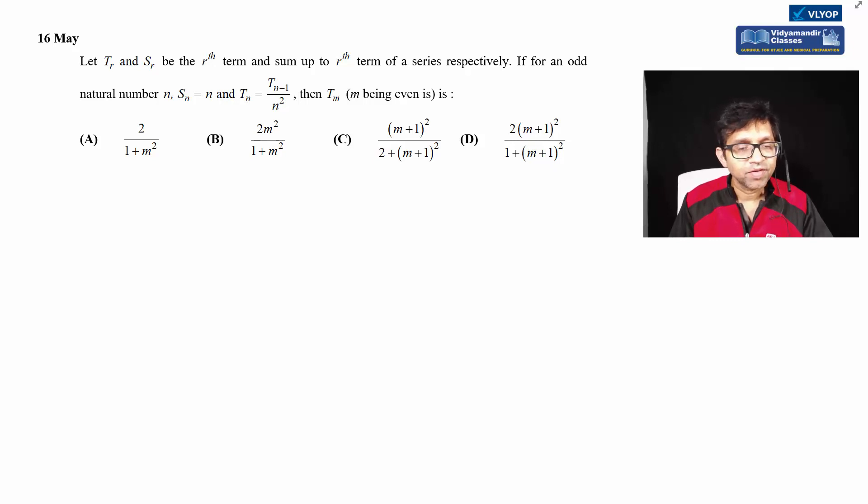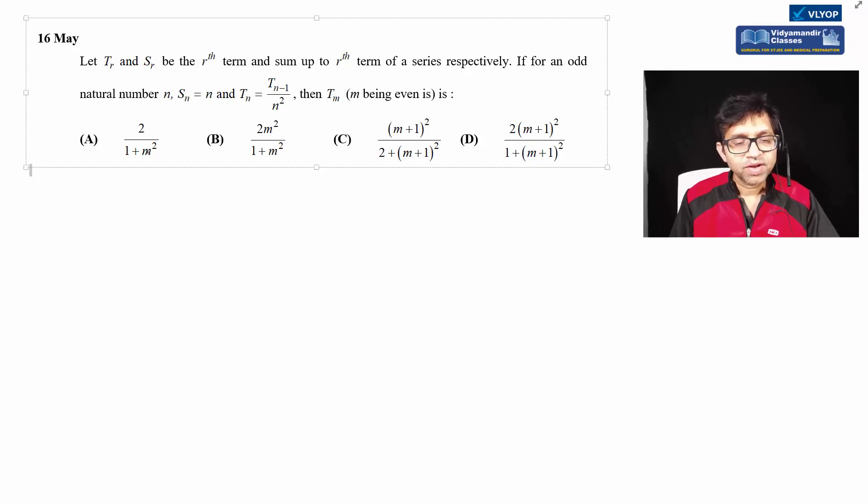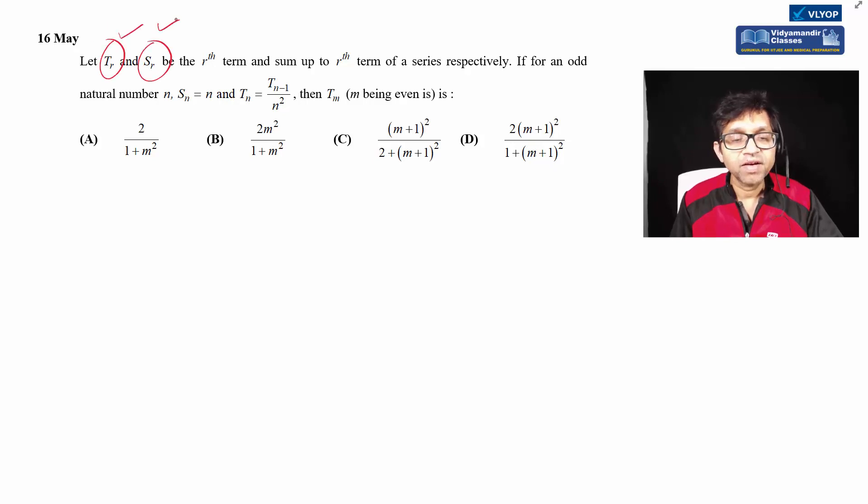So this is a daily math problem for 16th May, and again this question is based on summation of series. Let's see what this question is all about. It is given that tr and sr be the rth term and sum of first r terms respectively. It is given that for an odd natural number n, n is a natural number but odd.